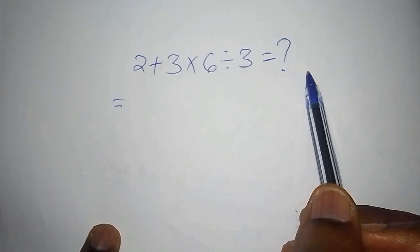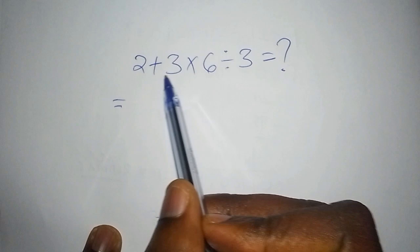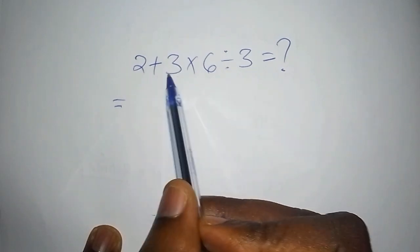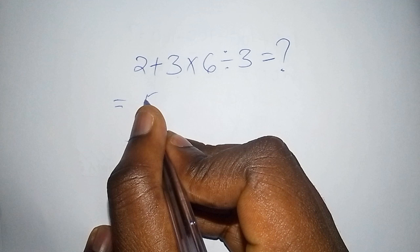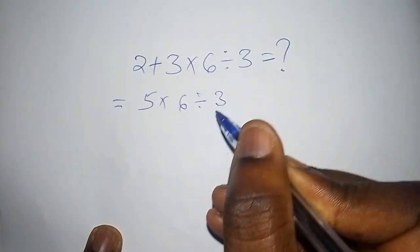For example, don't work out 2 plus 3 times 6 divide by 3 by just picking 2 plus 3 and saying it is 5, then multiply by 6, then divide by 3.